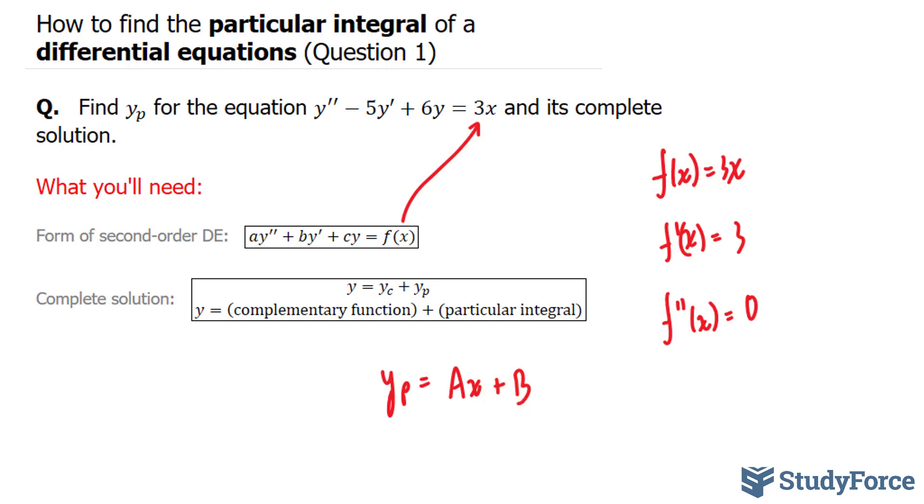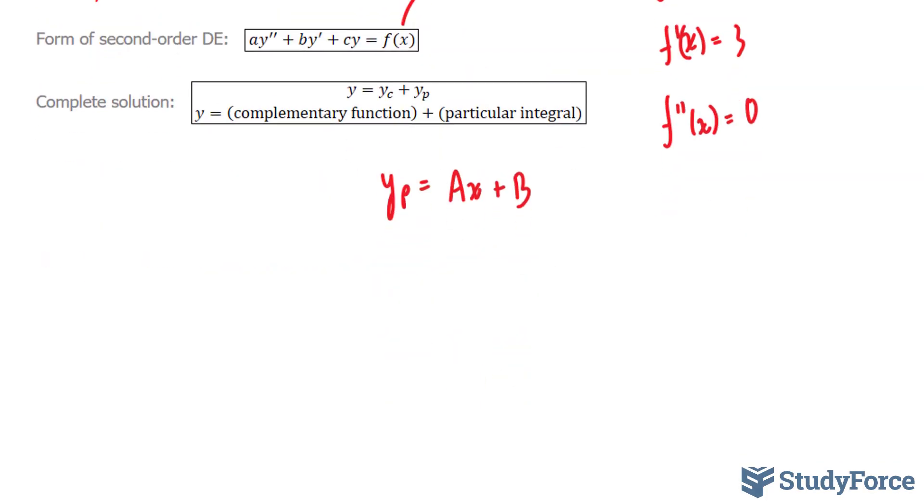Let's begin by taking the first and second derivative of yp. We'll end up with y prime sub p equals a, the derivative of ax is a, and the derivative of b is 0.